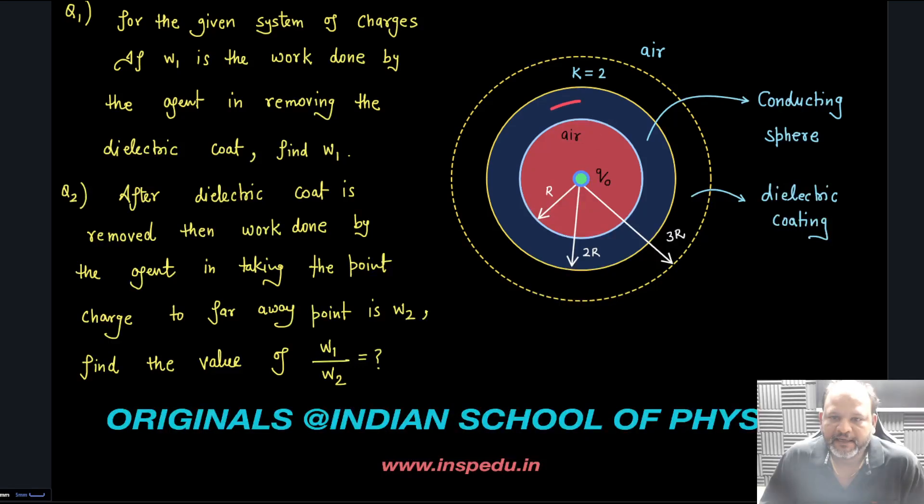What exactly is given in this problem is there is a conducting sphere with inner radius r and outer radius 2r. Outside this sphere from 2r to 3r there is a dielectric of dielectric constant 2, and inside this shell we are placing a point charge. This part is air in red color and beyond this again there is air.